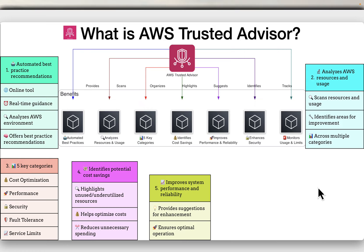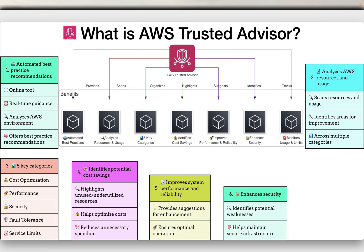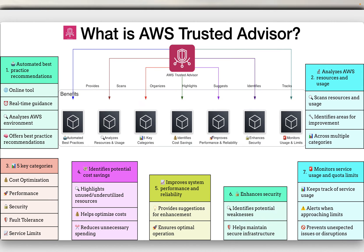The tool provides suggestions to enhance the performance and reliability of your applications running on AWS, ensuring optimal operation. Trusted Advisor identifies potential security weaknesses in your AWS environment, helping you maintain secure infrastructure. The tool also keeps track of your service usage and alerts you when you are approaching service limits, preventing any unexpected issues or disruptions.